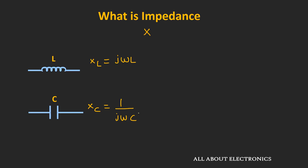This reactance is nothing but the ratio of the voltage and current — that is, the voltage applied across the inductor or capacitor and the current flowing through it. If we simply take the ratio of this voltage and current, we get the reactance of either the inductor or the capacitor. The unit of this reactance is Ohm.